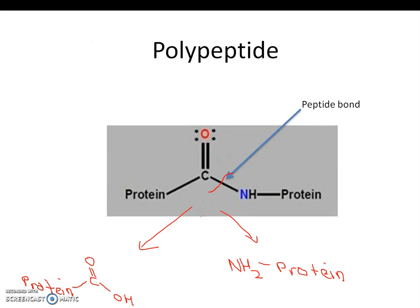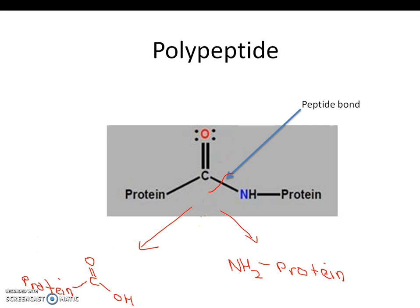This is the generic structure of a polypeptide. This is the peptide bond right here. What chymotrypsin does is that it cleaves the peptide bond to form two products.